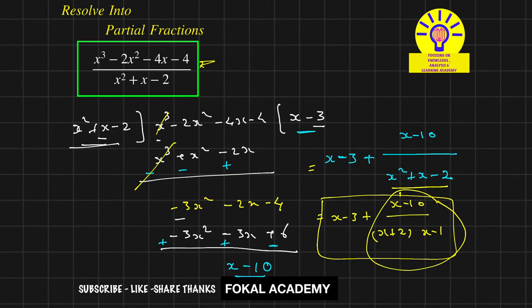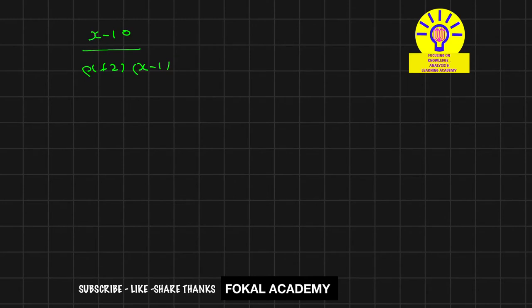We apply partial fractions using a shortcut method. Since there are two factors in the denominator, the fraction converts into a sum of two fractions: A divided by (x plus 2) plus B divided by (x minus 1), where A and B are constant values.